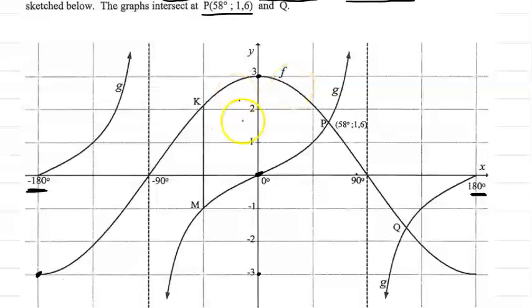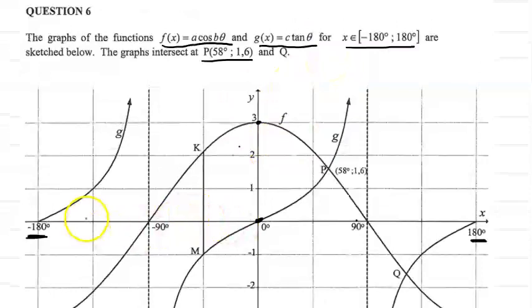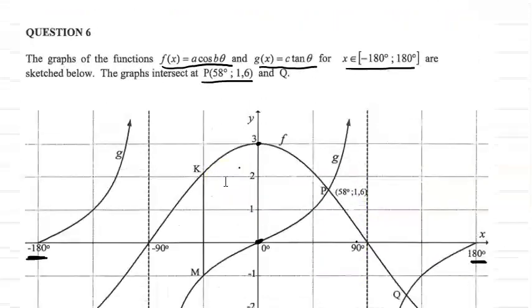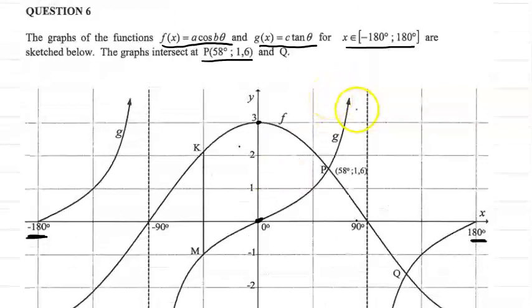What else can we see in this particular graph? We can see that the tan graph is drawn between minus 180 and 180, and there are very important things happening — for example, the asymptotes at minus 90 and 90, and this graph bears all the traits of the mother graph.